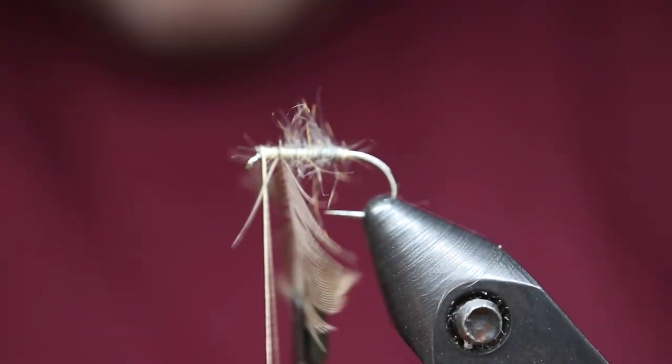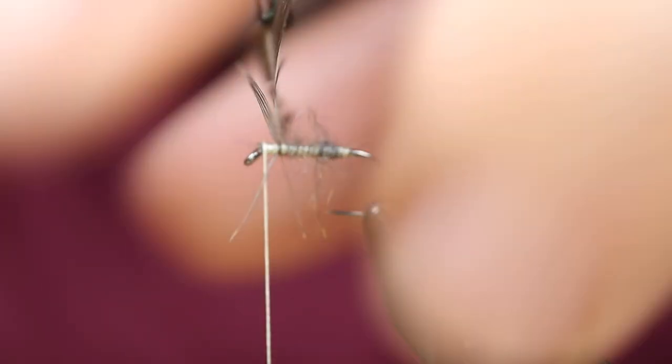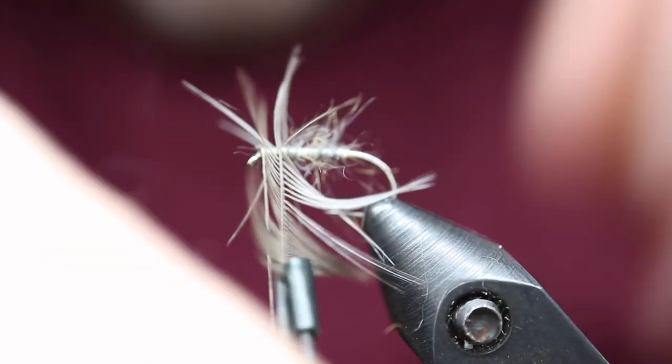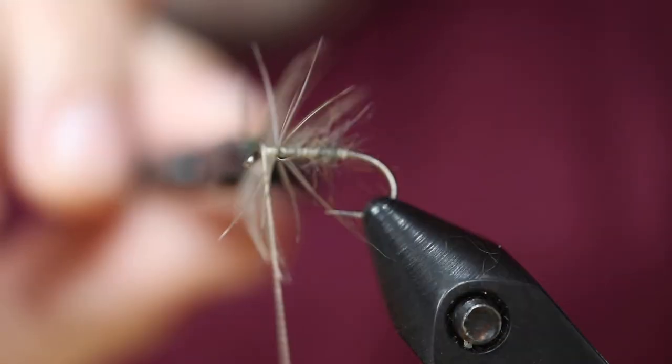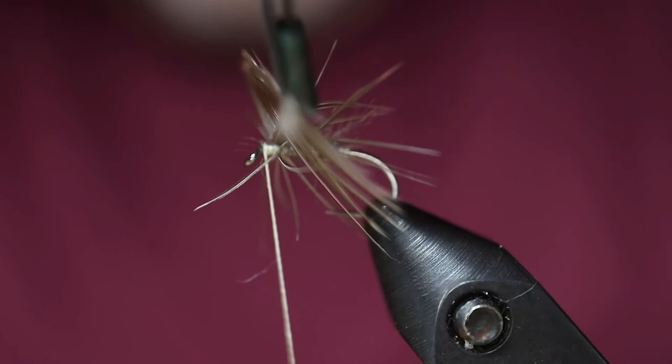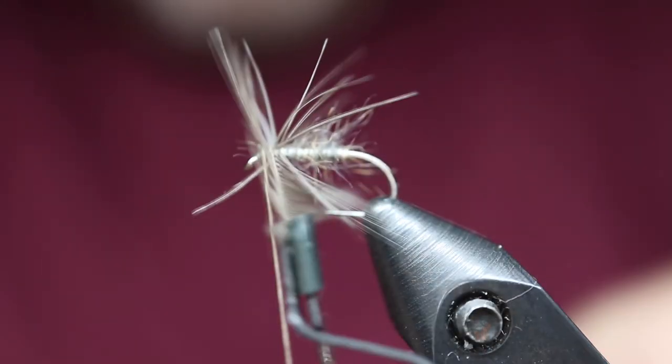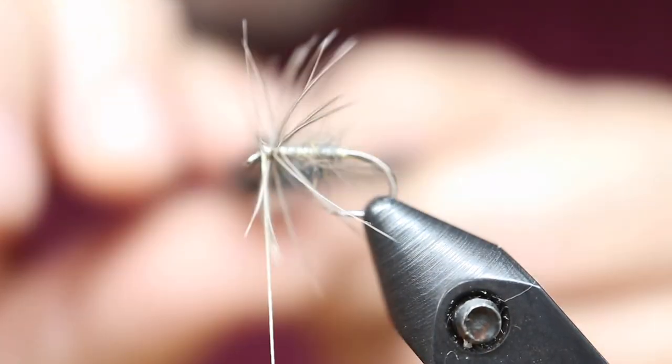So just tied the waterhen undercovert in by the tip there. And I'm going to do a bunch of wraps. You're welcome to hackle as little or as much as you like. I typically always just hackle the flies a lot. If that's not working...